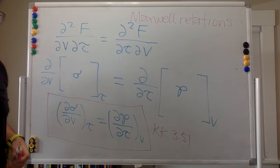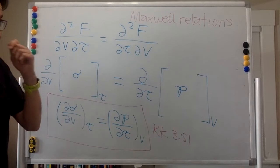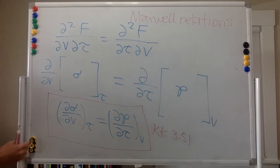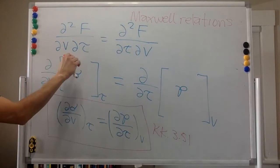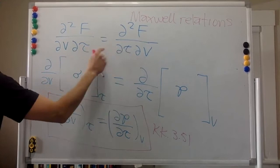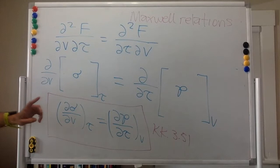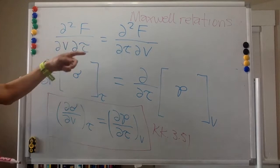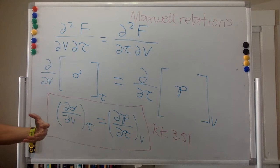Writing it more neatly: the partial derivative of entropy with respect to volume at constant temperature equals the partial derivative of pressure with respect to temperature at constant volume. This is equation 3.51 - it is one of the Maxwell relations. In many thermodynamics books all the Maxwell relations are derived in the same chapter, but in Kittel they appear where they are needed. All the Maxwell relations are a consequence of the commutative property of partial derivatives.